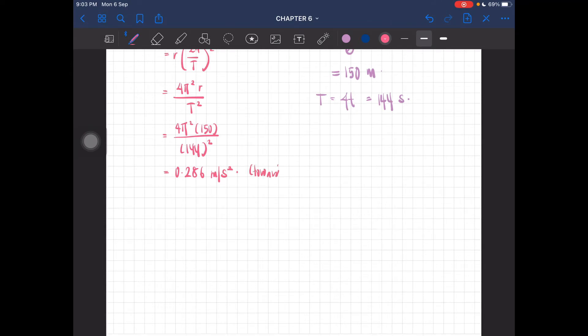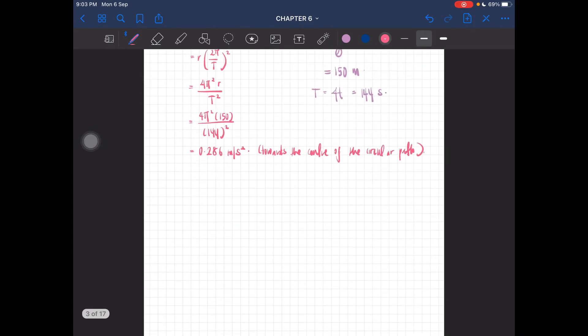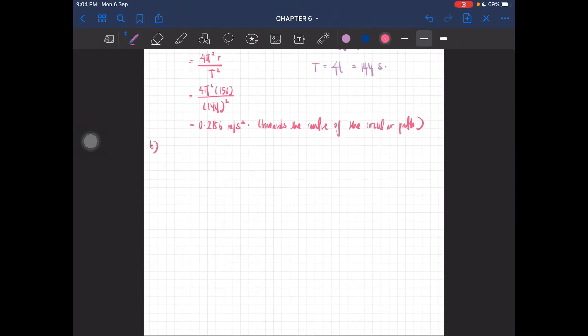Next question: the car speed. The linear speed can be calculated using v = rω. So r is 150, omega is 2π/t, which is 2π/144, and you'll get 6.54 meters per second.